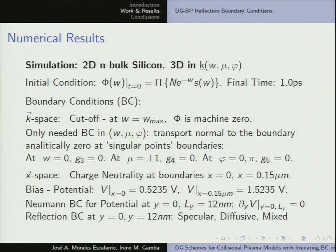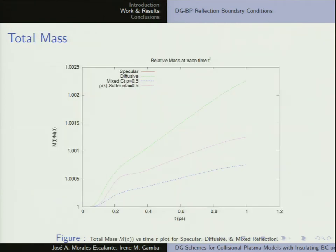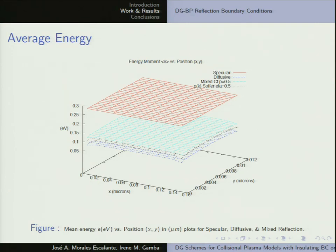For 2D bulk silicon, we have a Maxwellian as initial state with a difference of potential and charge neutrality. We analyze three conditions — the red is specular and the others are diffusive or mixed reflection. You can see how diffusivity alters the density profile close to the reflecting boundaries, and by conservation of mass, close to the center there is a diminution of the density profile. There's also a difference in average velocity predicted by specular reflection, and a decrease in average energy with diffusive reflection boundary conditions. The electric potential solution is the same.